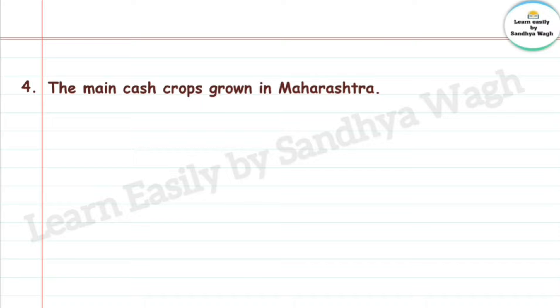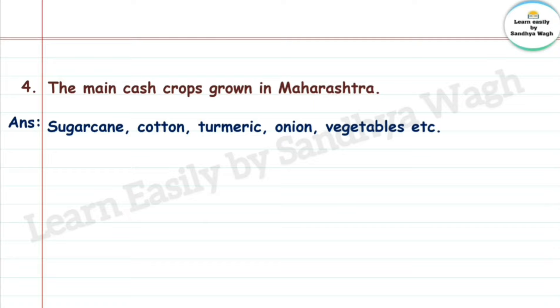Question 4: The main cash crops grown in Maharashtra. Answer: Sugarcane, Cotton, Turmeric, Onion, Vegetables, etc.